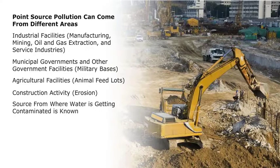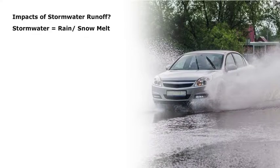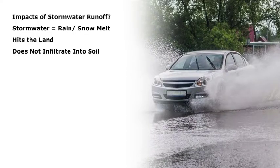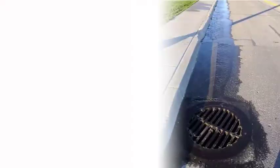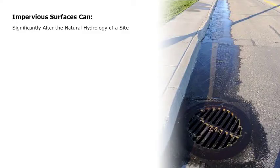Point source pollution is where you actually know where and how the water is getting contaminated. So why are we so concerned about stormwater runoff? Stormwater is basically rain or snowmelt that hits the land during precipitation events and doesn't infiltrate into the soil. Stormwater runoff is a naturally occurring event in small amounts, but large areas of impervious surfaces — such as rooftops, roads, sidewalks, and parking lots — can significantly alter the natural hydrology of a site.